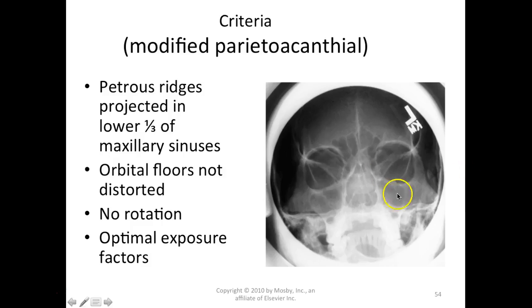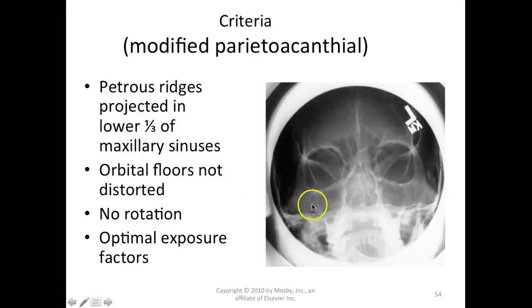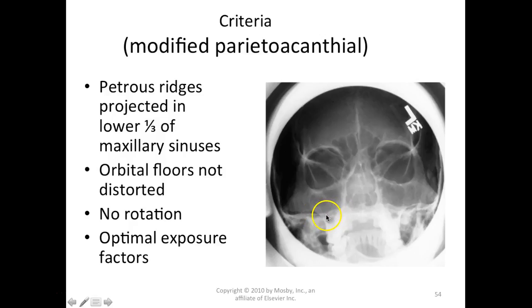On the modified Waters, the petrous ridges are projected into the lower one-third of the maxillary sinuses — not below, but in the lower one-third. If you see the petrous ridges only in the lower one-third on your regular Waters, you may have already achieved a modified Waters, so check before repeating. We want the orbits without distortion, and we want the sinuses clearly visible.